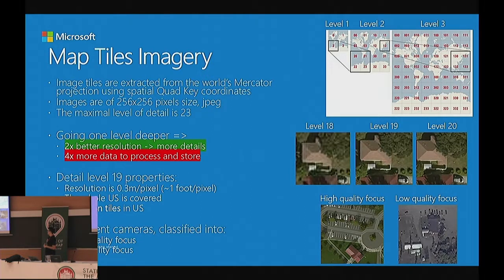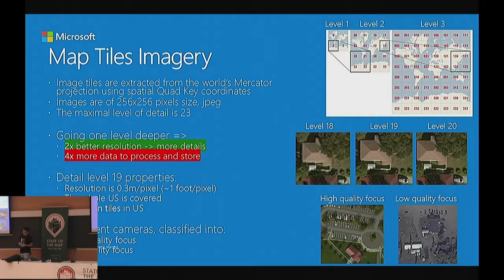Regarding scale, we have 4 billion tiles in the US, and one important thing is that not all of these tiles are shot by a single camera — we have 14 different cameras with different properties. Ideally you would train a single neural net with all of them, but that is not optimal and requires a huge amount of investigation. So basically what we did is we clustered these photographs into high-focus and low-focus photographs and created a neural network for each of these groups.